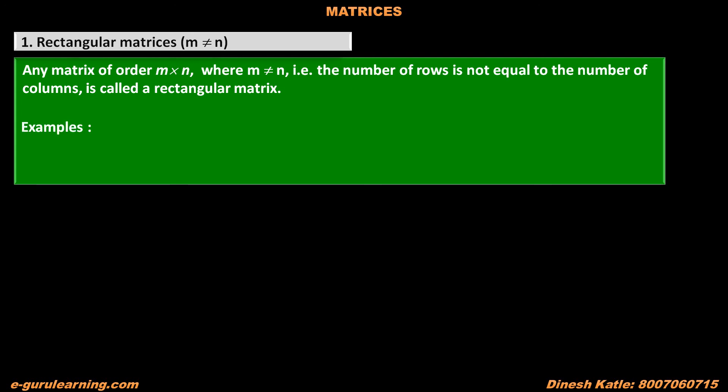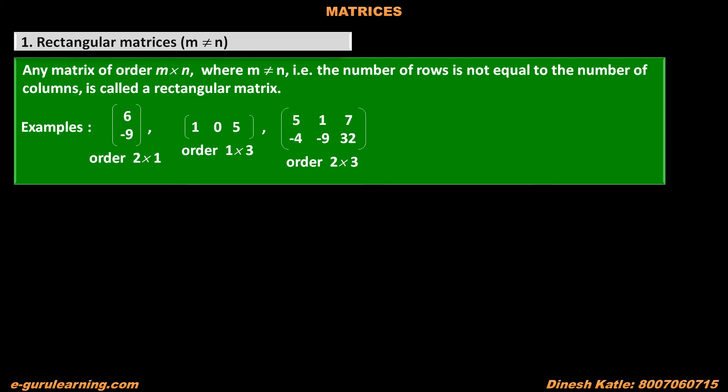See examples. The first matrix contains elements 6 and minus 9. This matrix has 2 rows and 1 column, so the number of rows is not equal to the number of columns — it is a rectangular matrix. The third matrix has 2 rows and 3 columns, so again the number of rows is not equal to the number of columns — it is also a rectangular matrix.